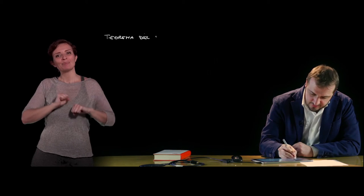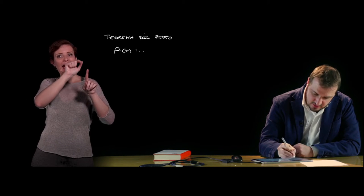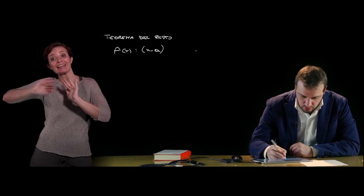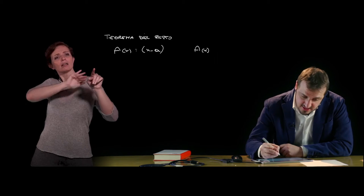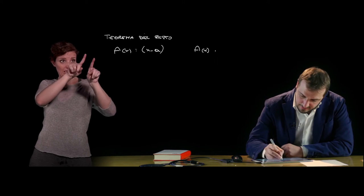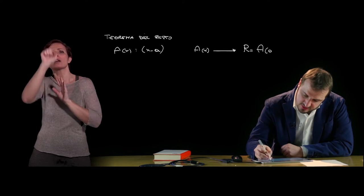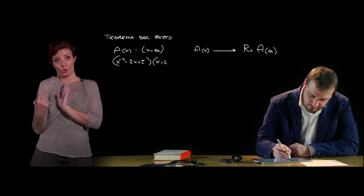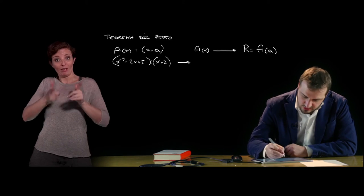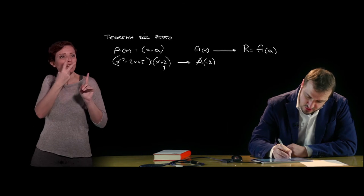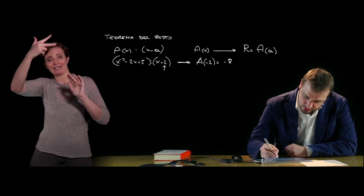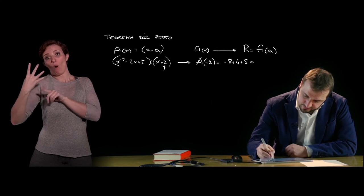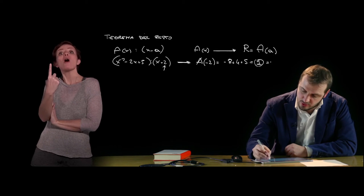Two very important applications of Ruffini's rule are: first, the remainder theorem, which tells us the value of the remainder of a division A(x) ÷ (x - a) is simply the value that polynomial A(x) takes when we substitute x = a. So the remainder equals A(a). For example, for (x³ - 2x + 5) ÷ (x + 2), we substitute x = -2: (-2)³ = -8, minus 2×(-2) = +4, plus 5, giving a total of 1, which is exactly the remainder.